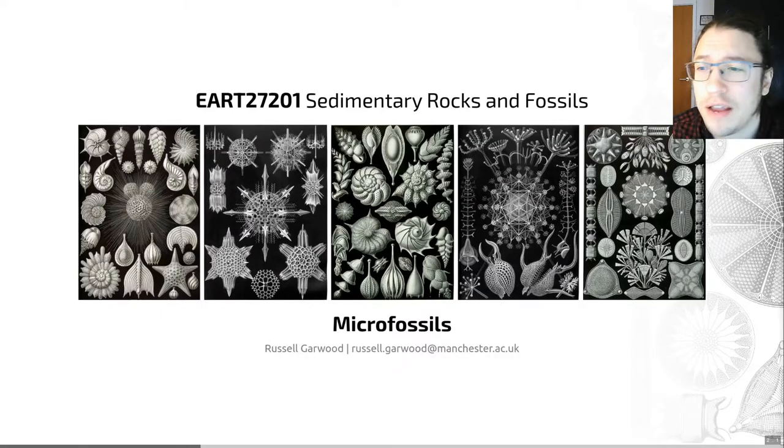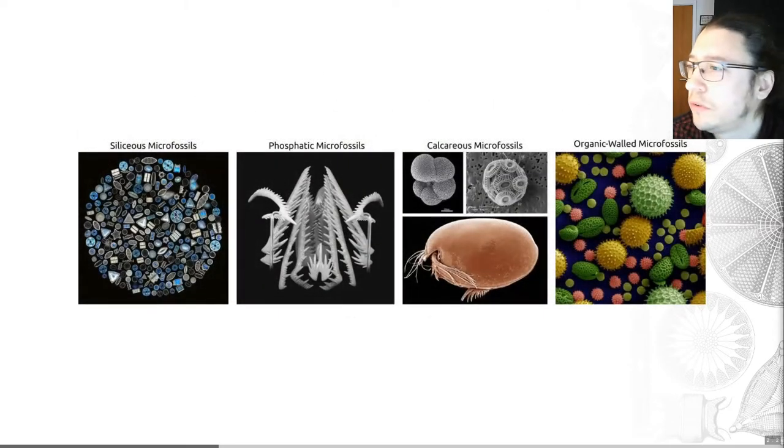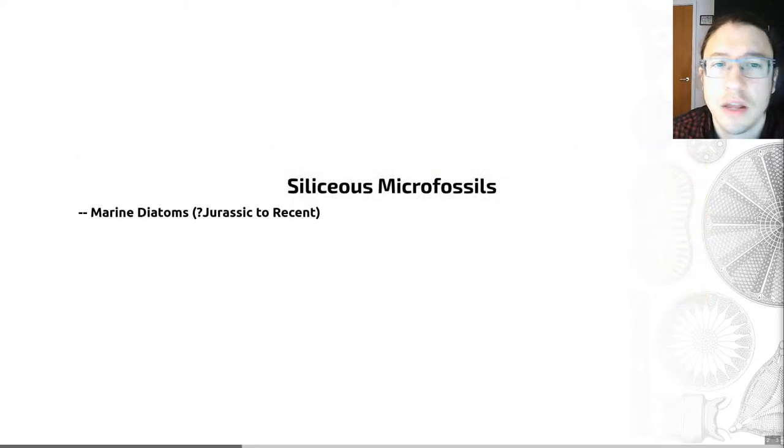Let's start by looking at the siliceous microfossils. These microfossils, shown on the left-hand side here, make their hard parts out of silica. In particular, we're going to meet two groups today.